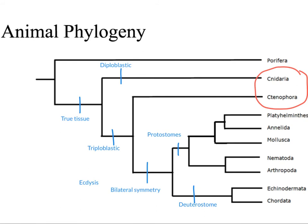Our last trait to add to the tree is going to be ecdysis. This helps us split out these groups — nematodes and arthropods — from the platyhelminthes, annelids, and molluscs. So nematoda and arthropoda actually go through ecdysis, where they shed an outer cuticle or exoskeleton.